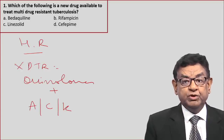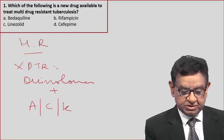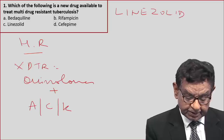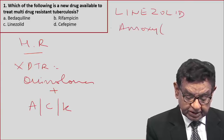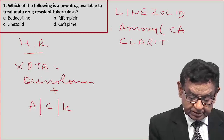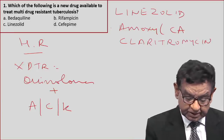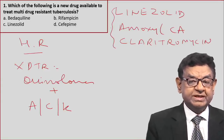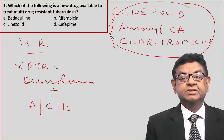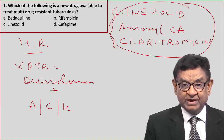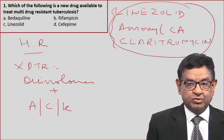Let us see what the other newer drugs for tuberculosis are. The other newer drugs for tuberculosis are linezolid, amoxicillin-clavulanic acid, and clarithromycin. If you notice these drugs, although they are supposed to be newer tuberculosis treatments, we know very well these are drugs we also use for the treatment of staphylococcus infection.